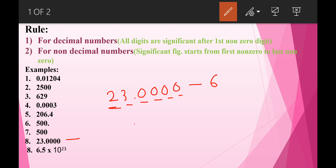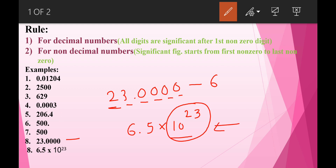Here another example is given: 6.5 × 10²³. When an exponential number is given, we should not consider the exponential part when counting significant figures. We consider only 6.5, which is a decimal number, so the significant figure for this number is 2.